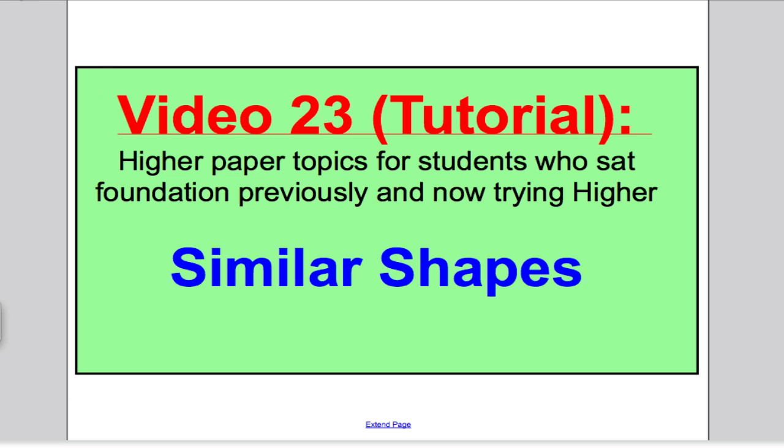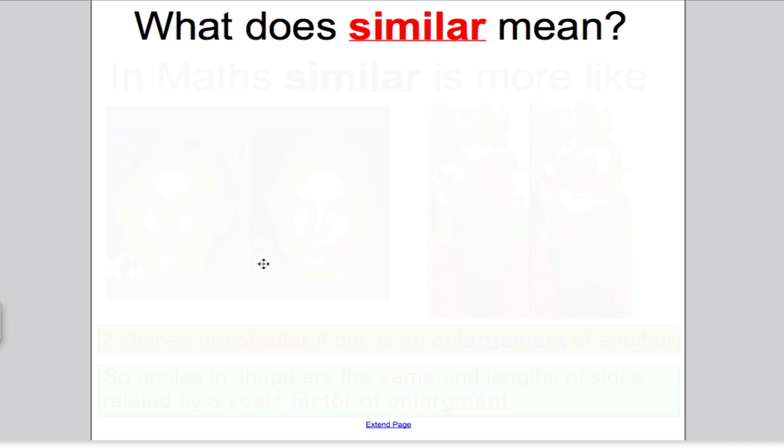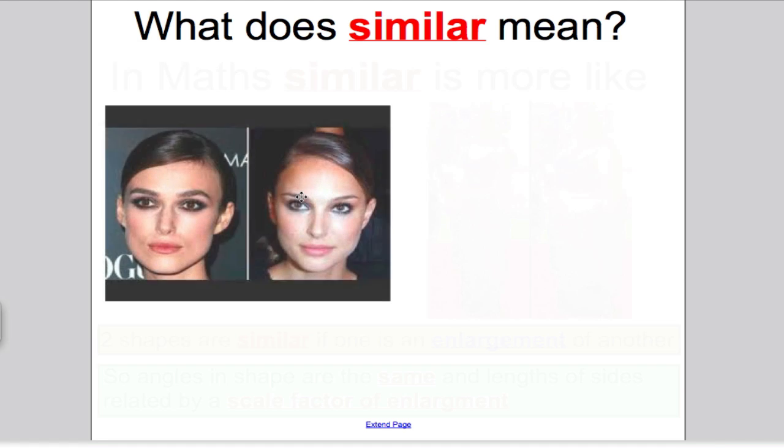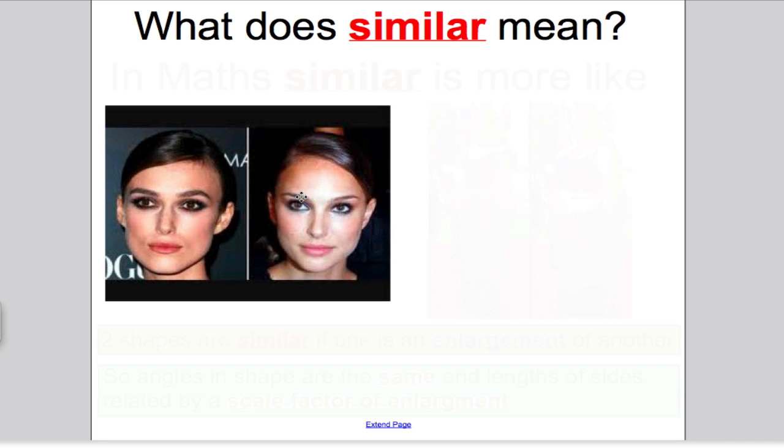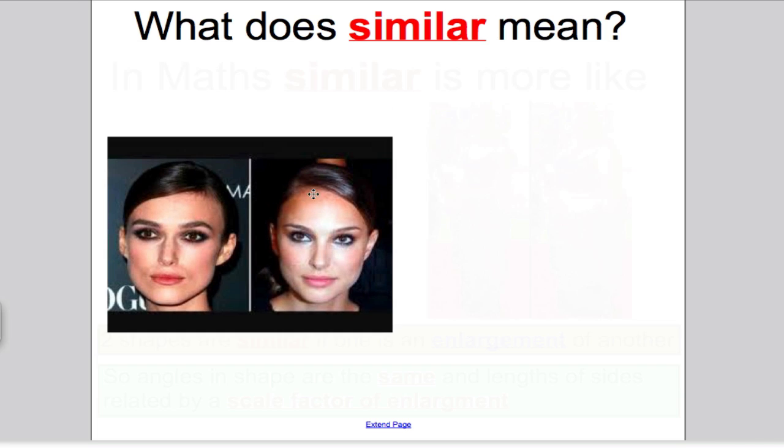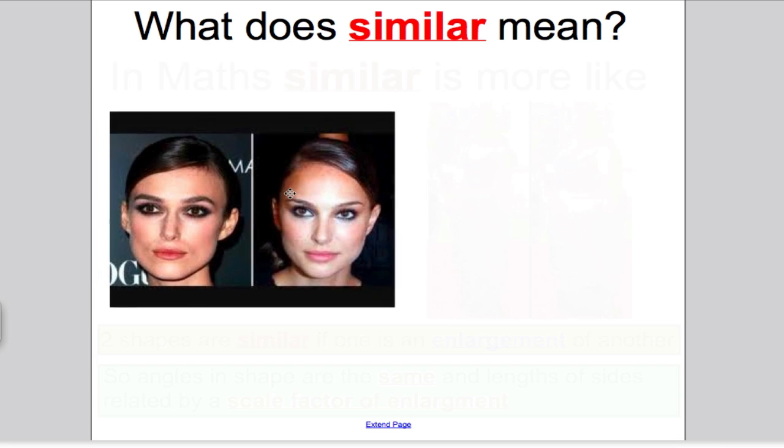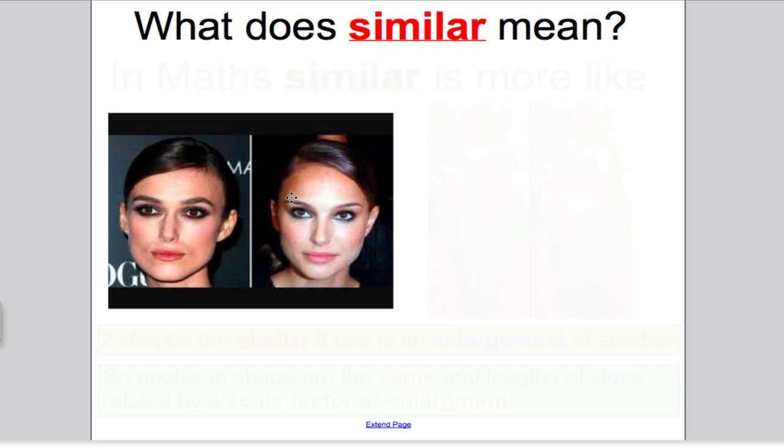Let's start with what a similar shape is. What does similar mean? Well, in everyday English, similar is something where two things look like each other and they're not quite identical, but they're like each other. I always get Keira Knightley mixed up with Natalie Portman, so in my mind they're similar looking. But in math, similar is something actually quite different.